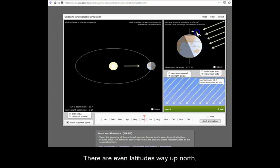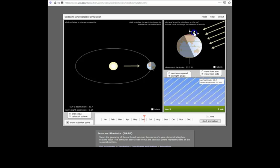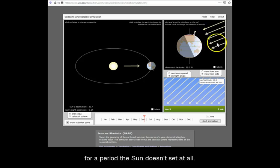There are even latitudes way up north, known as the Arctic Circle, where, for a period, the Sun doesn't set at all.